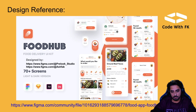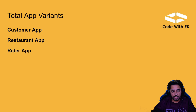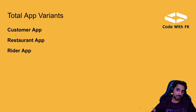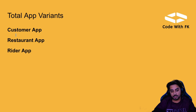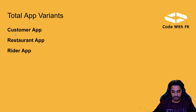The next thing is the variants of the application. We will be implementing three different applications: a customer app for customers to place orders, a restaurant app for restaurants to manage their orders and add their products or food items, and a rider app that will handle tracking and assigning orders to riders.